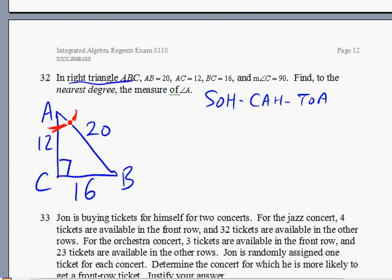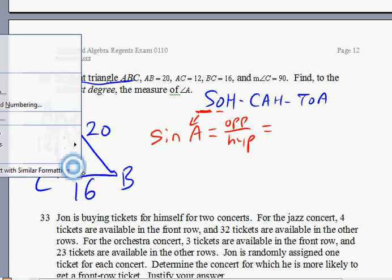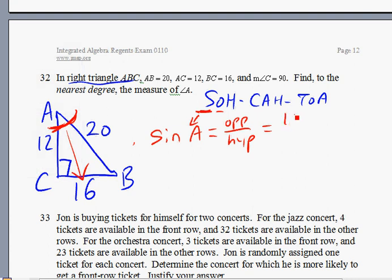There's a few ways you can do it. You can use sine, cosine, or tangent. You can pick one, it doesn't matter. Let's just pick sine here. Sine of angle A is equivalent to opposite over hypotenuse. Therefore, opposite of A is 16. Hypotenuse is along the side, 20. Sine of A is equal to 16 over 20.